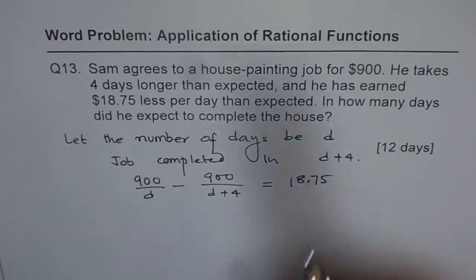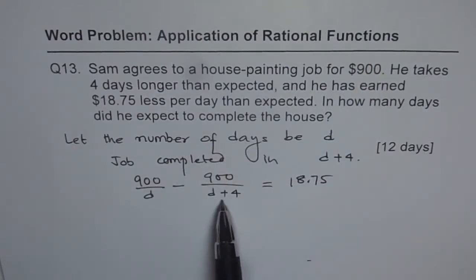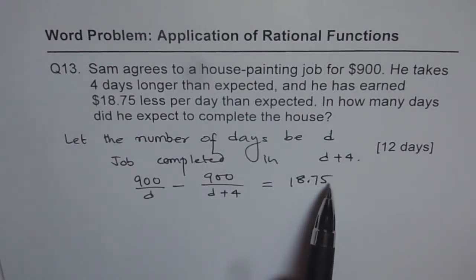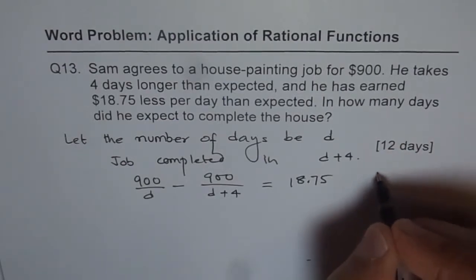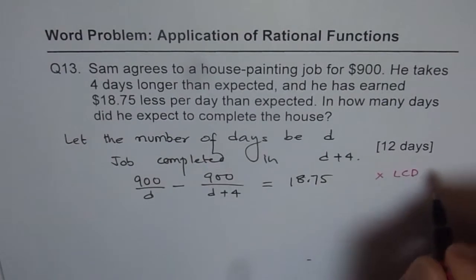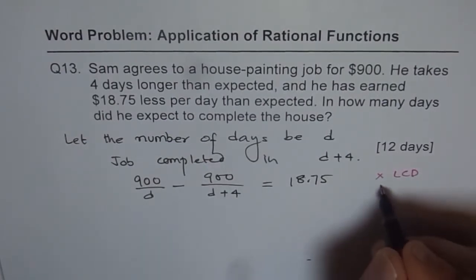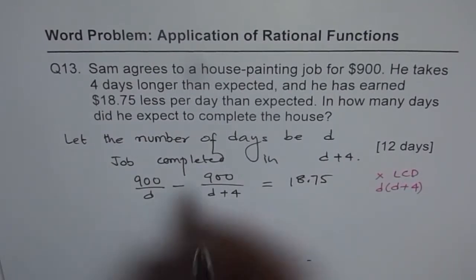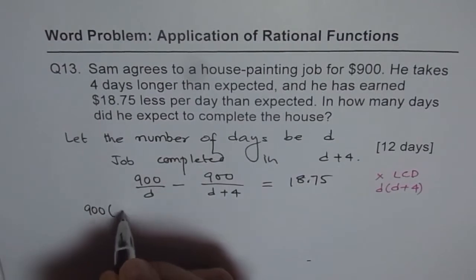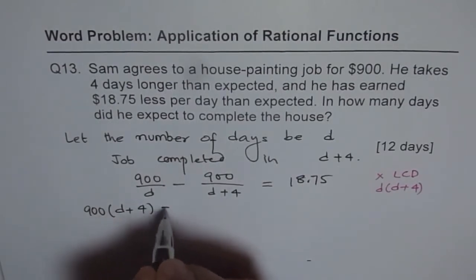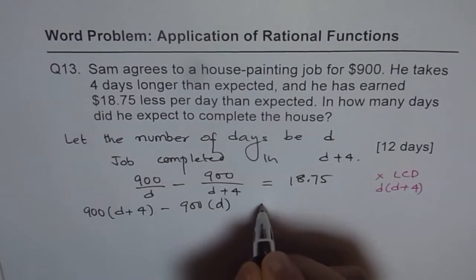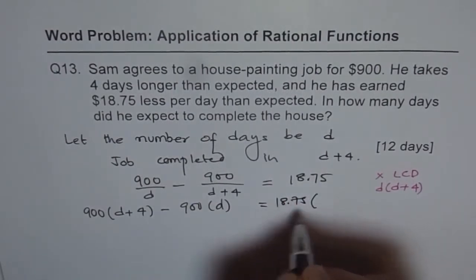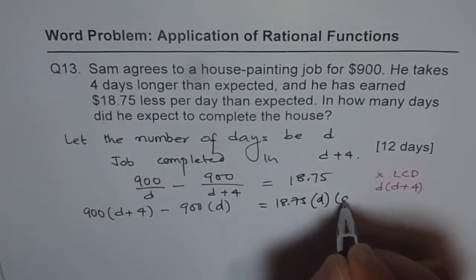And these are examples of rational functions. You get variable right in the denominator, and a very simple way to solve it is multiply with lowest common denominator. So that is what we are doing always. So times it with lowest common denominator, and in this case, our lowest common denominator is D times D plus 4. All the terms. So when you do that, what do you get? You get 900 times D plus 4 minus 900 times D equals to 18.75 times D times D plus 4.